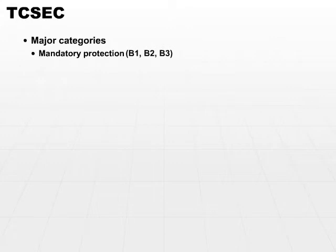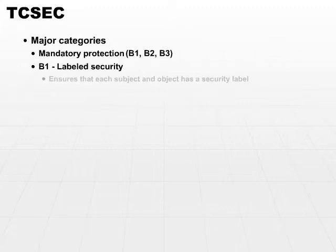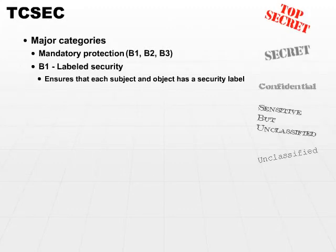Category B1 is more secure than Category C2. It's called labeled security. In addition to all the C2 category restrictions, B1 systems must also ensure that every subject and object has a security label.